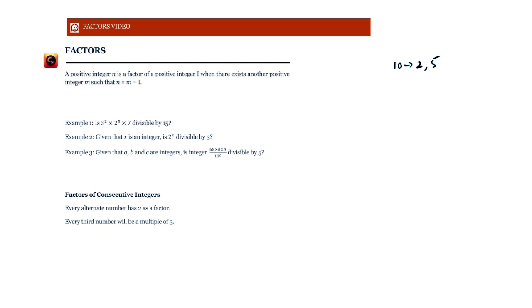Which means that when we divide 10 by 2, we get an integer. When we divide 10 by 5, we get an integer. That is 2 and 5, they completely divide 10 without leaving any remainder. These are called the factors of 10.